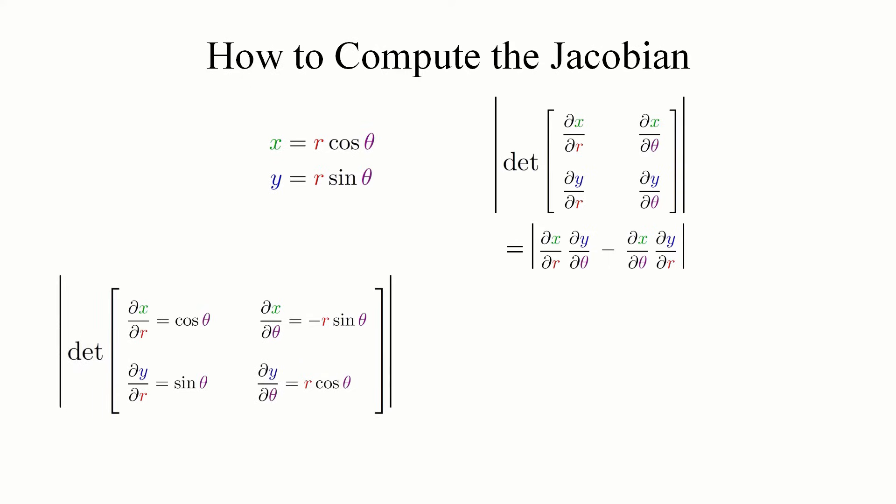This gives us our Jacobian matrix. To take the determinant of this matrix, we multiply first down the main diagonal, which gives us r cosine squared of theta, and then subtract from this the product across the other diagonal, which is negative r sine squared of theta. This becomes r cosine squared of theta plus r sine squared of theta, which, if you factor out the r, becomes r times the quantity cosine squared of theta plus sine squared of theta. And if you remember your trig identities, you know cosine squared plus sine squared is 1, so all we're left with is r.